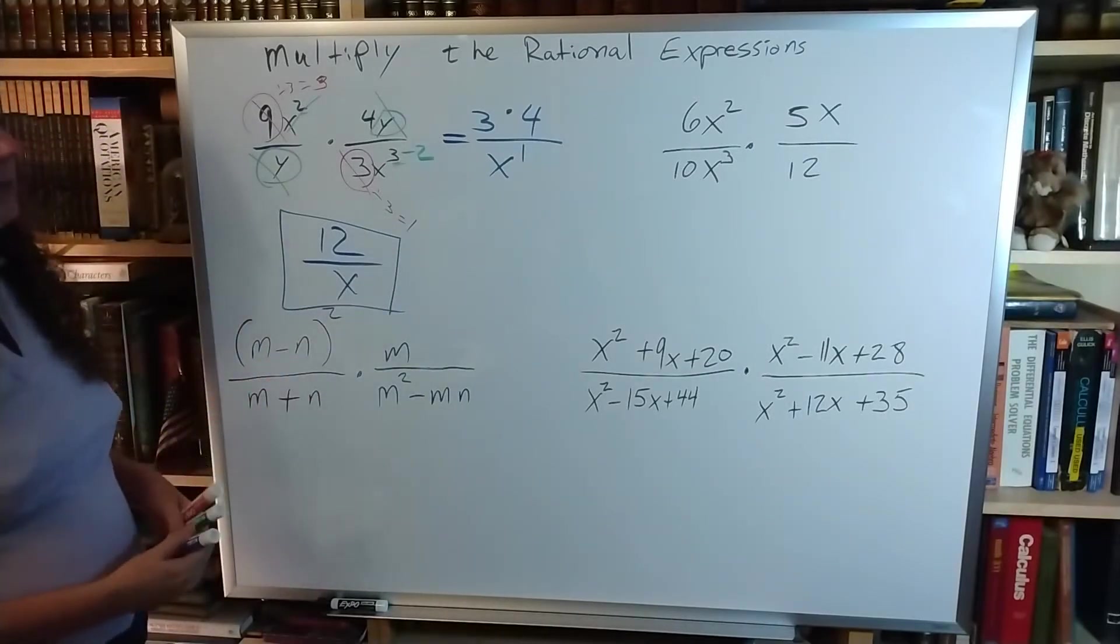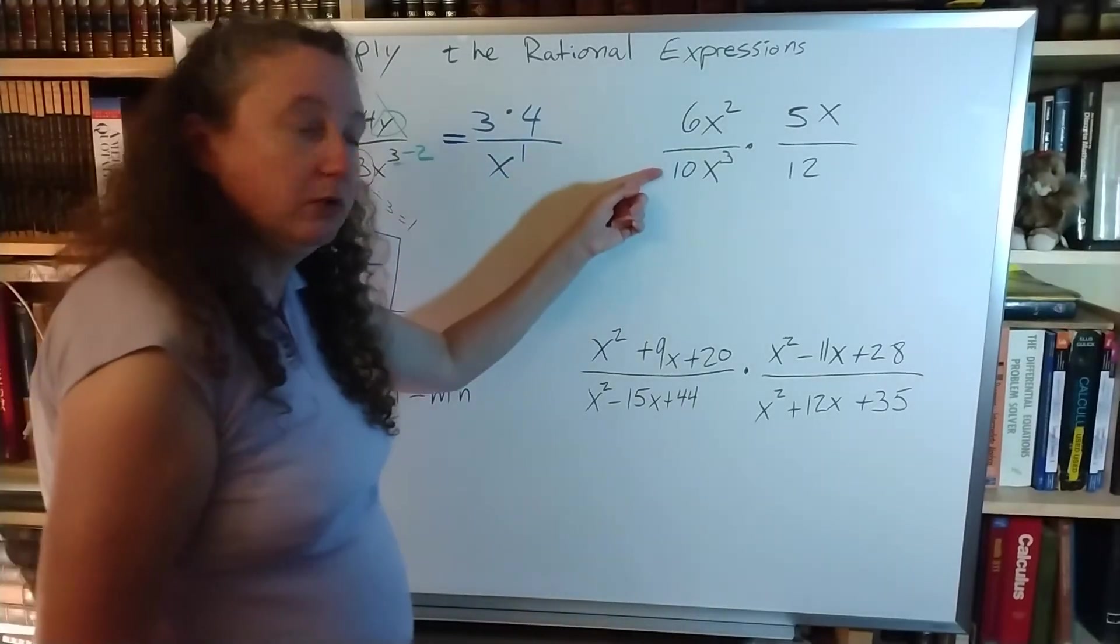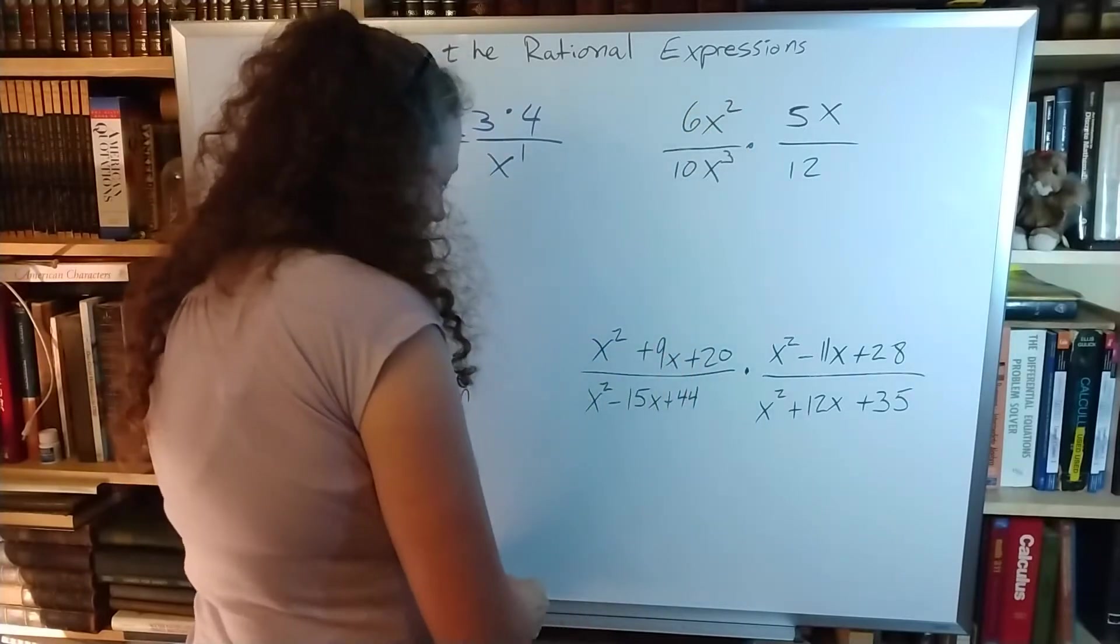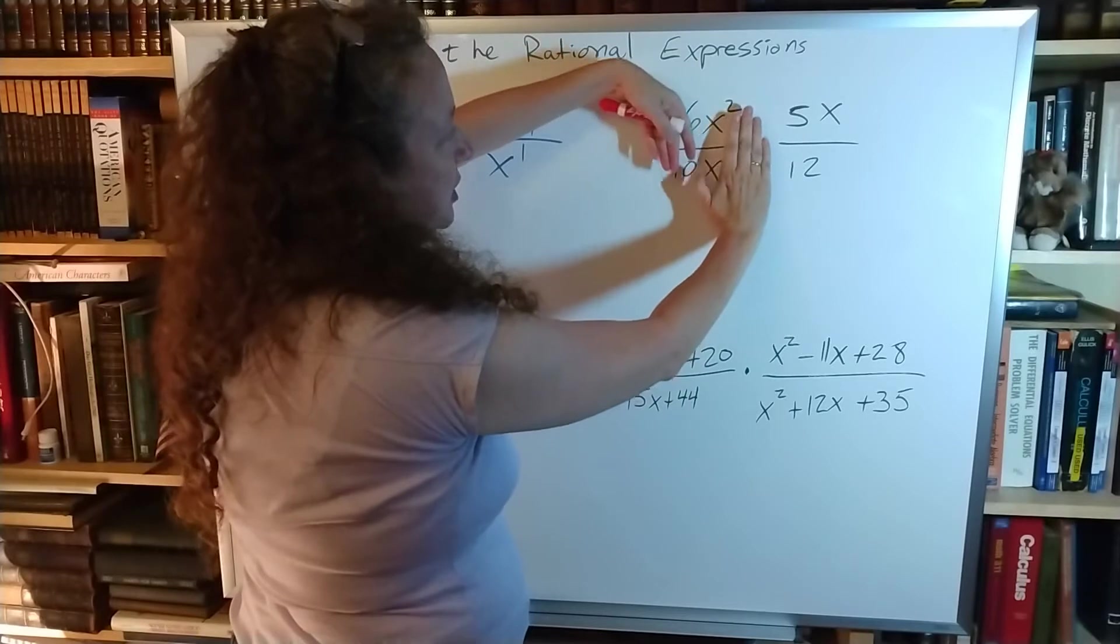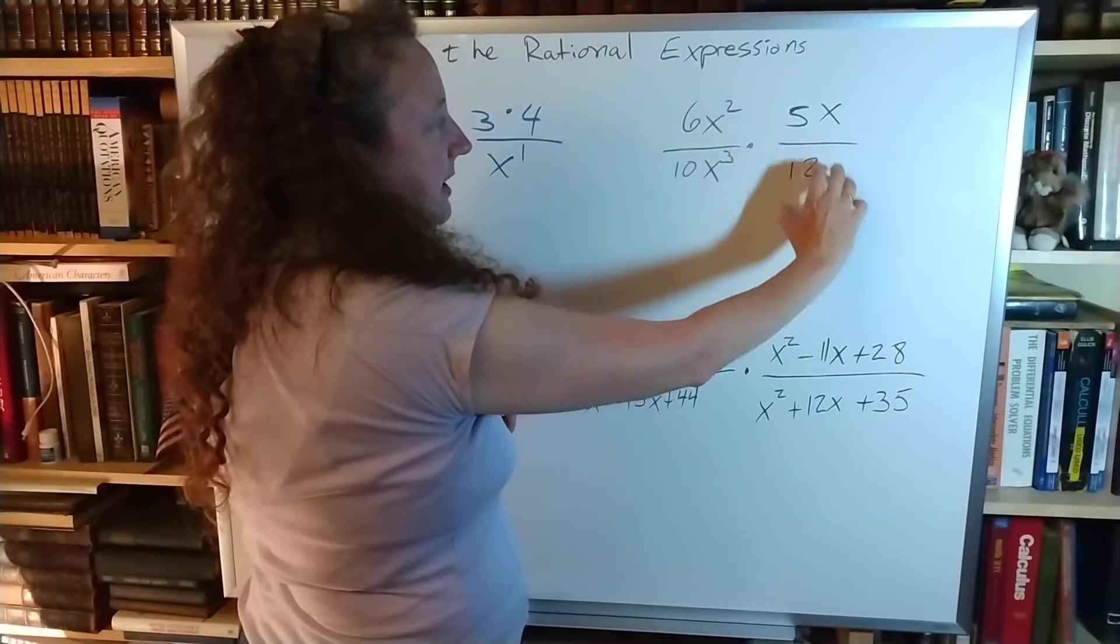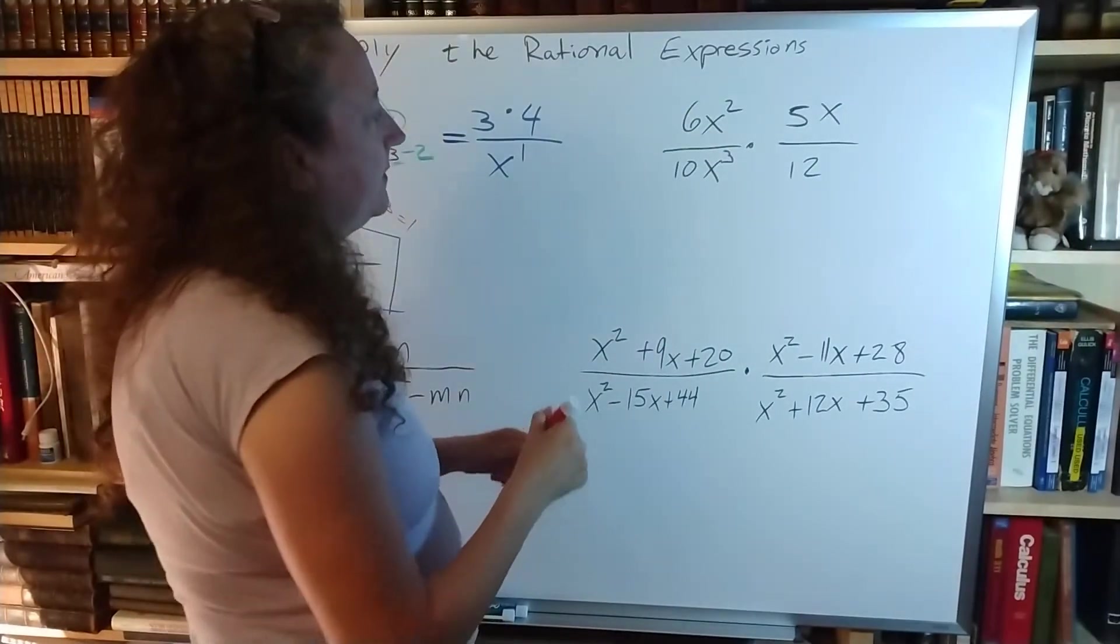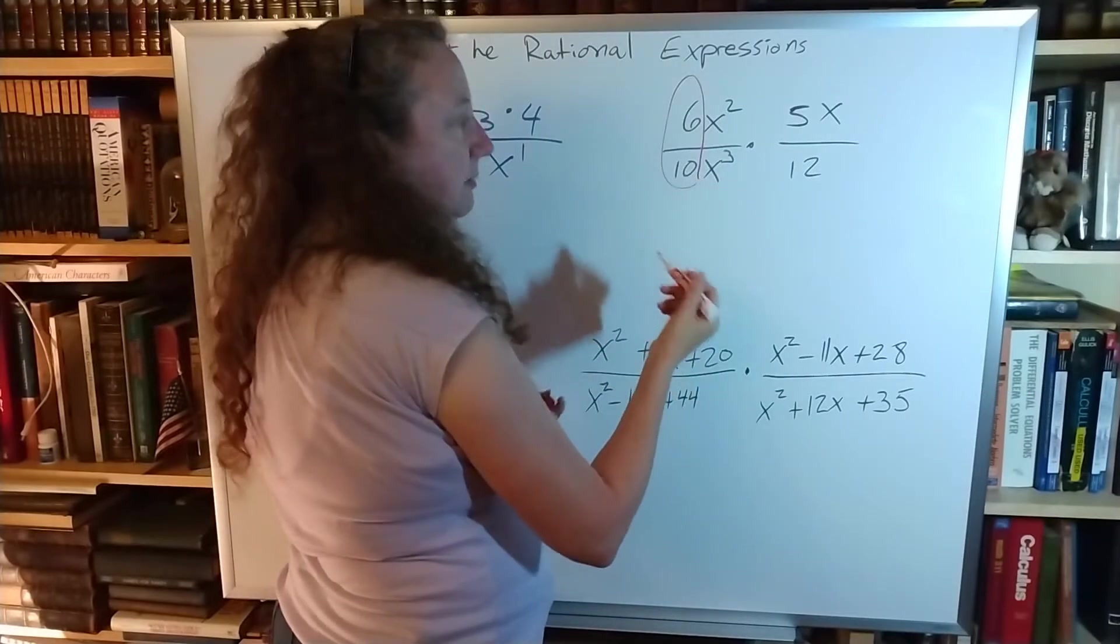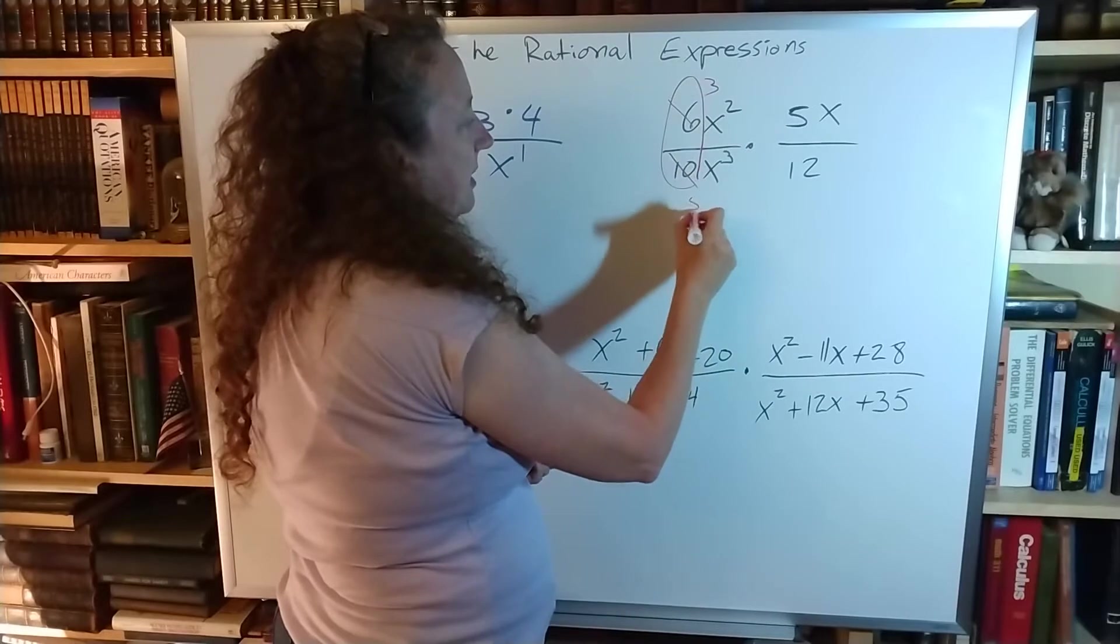Looking at the next problem over there. Again, you want to simplify the numbers in one fraction and simplify the letters in one fraction before you move to simplifying from one fraction to the other fraction. So let's look at the 6 and the 10 here. They can both be divided by 2. So that becomes a 3, that becomes a 5.